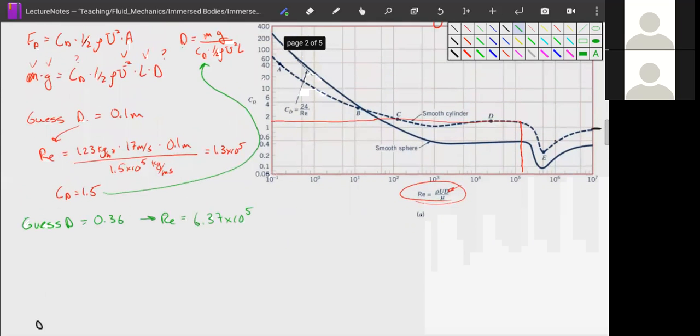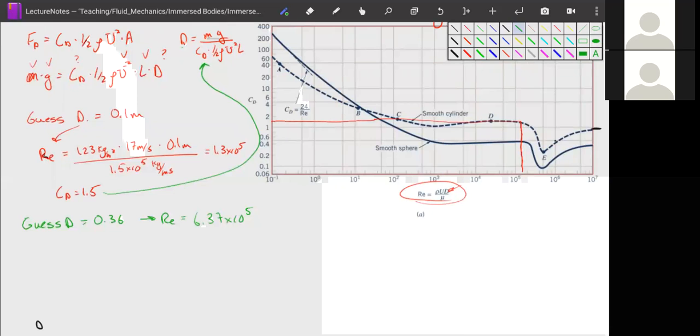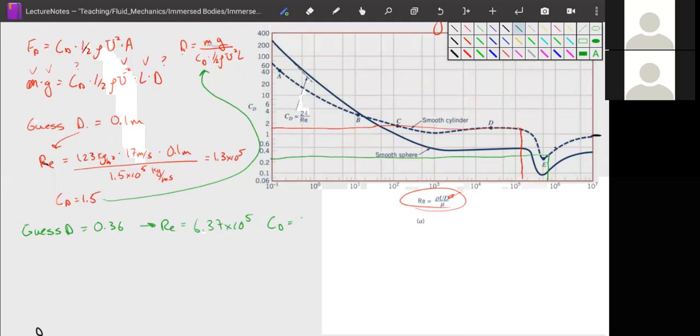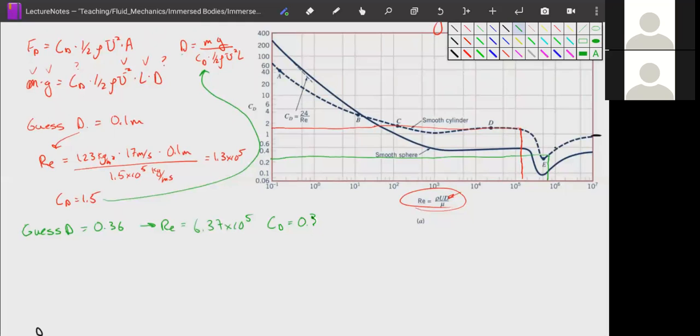We go to our sheet here, and 6.37 times 10 to the fifth is going to be right about here or so. We do that and then go over. We get a much lower drag coefficient. We get a cd is equal to 0.3, which when we plug into this equation up here gives us a d new equal to 1.8 meters.